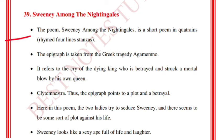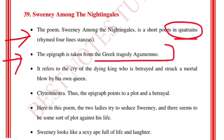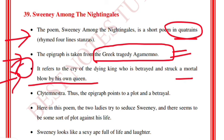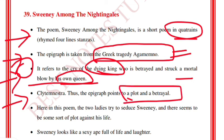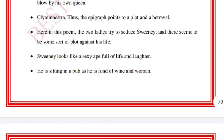Sweeney Among the Nightingales is a short poem by T.S. Eliot written in quatrains. The epigraph is taken from the Greek tragedy Agamemnon. It refers to the cry of a dying king who is betrayed and struck a mortal blow by his own queen — so betrayal is a key theme here. In this poem, two ladies try to seduce Sweeney, and there seems to be some sort of plot against his life.